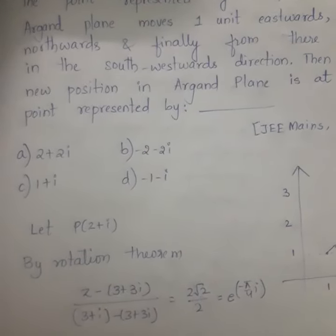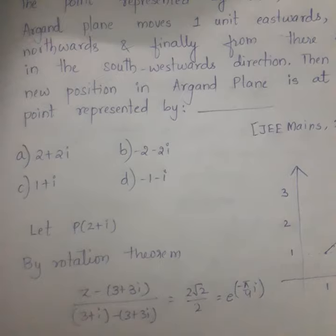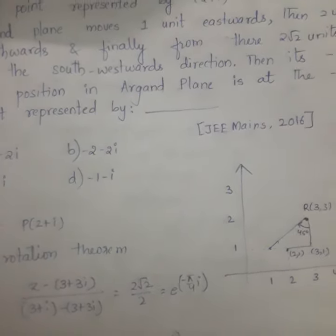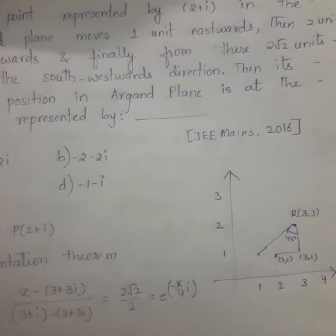He has given four options. First option is 2 plus 2i, B is -2 - 2i, C is 1 plus i, D is -1 - i. This question is coming in JEE Mains 2016.